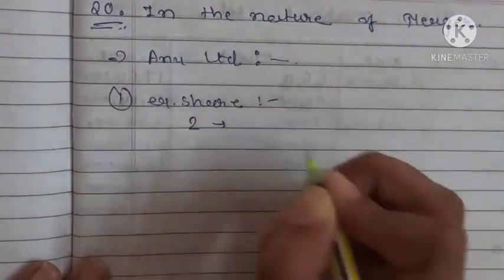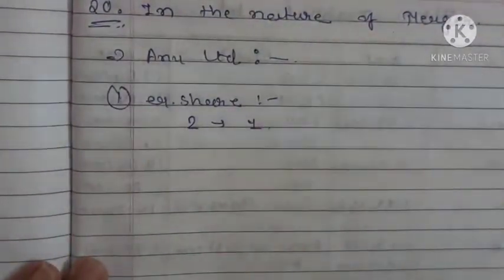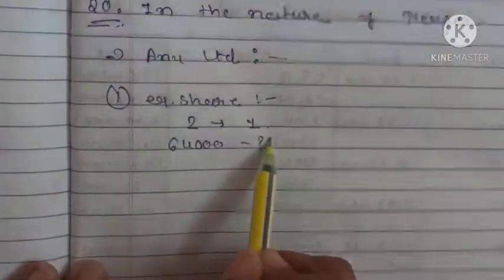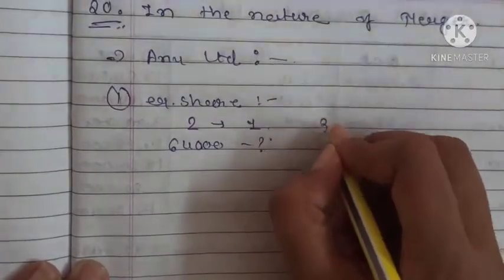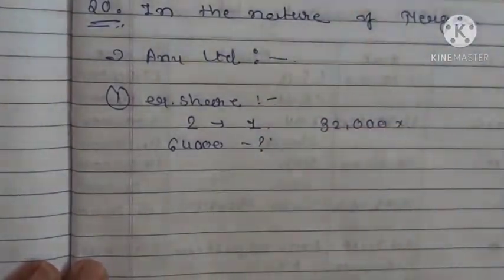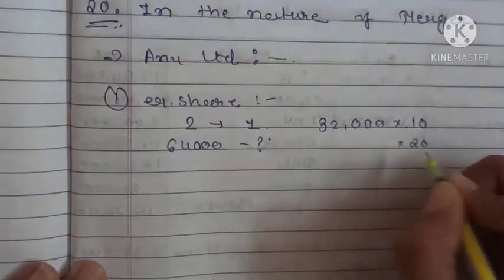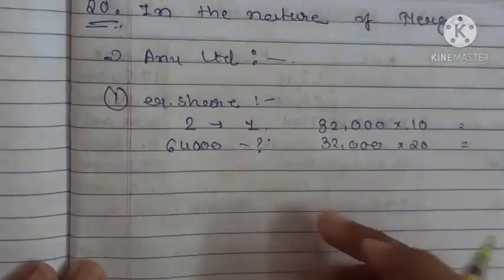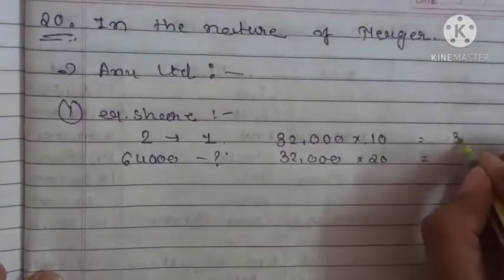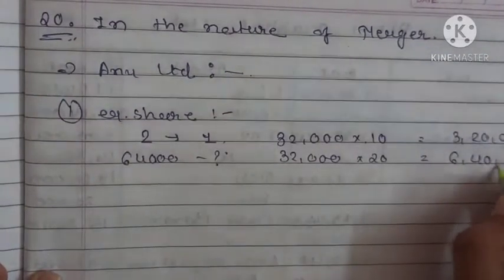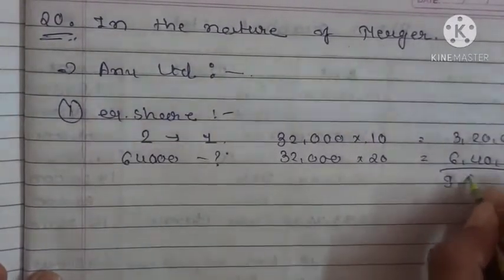The number of equity shares of Anu Ltd is 64,000. So on 64,000 shares, how many will be issued? Obviously 32,000. At ₹30, out of which face value is ₹10, so remaining ₹20 is a premium. Total amount: 32,000 × ₹10 = ₹3,20,000 and 32,000 × ₹20 = ₹6,40,000. Total is ₹9,60,000. This is the equity share amount.